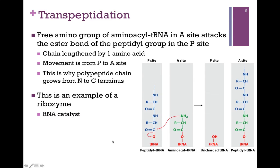It is because of the attachment of the amino acid to the tRNA — that free amino end — that our polypeptide chain grows from the N terminus to the C terminus. And this is an example of a ribozyme, an RNA catalyst. So we've carried out transpeptidation, and now we're ready to move to the next codon so that we can add the next amino acid.